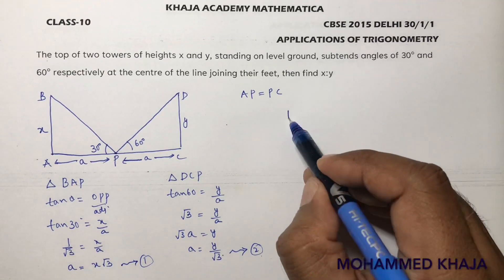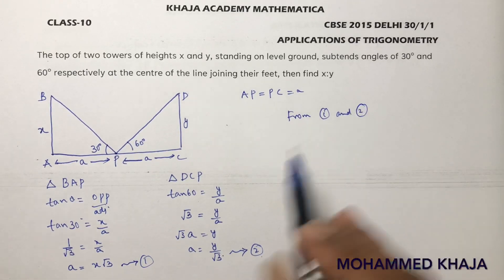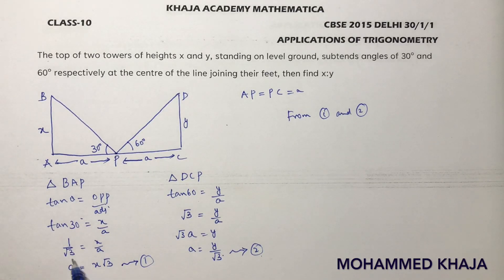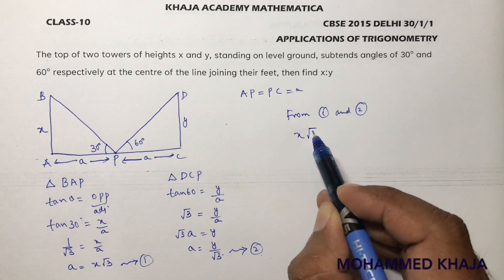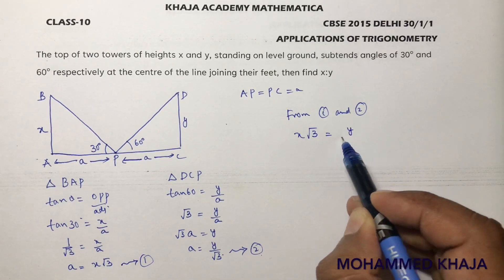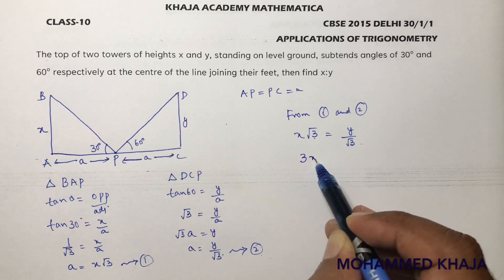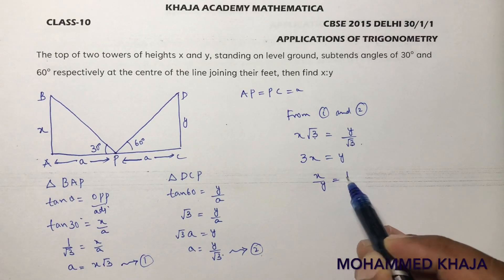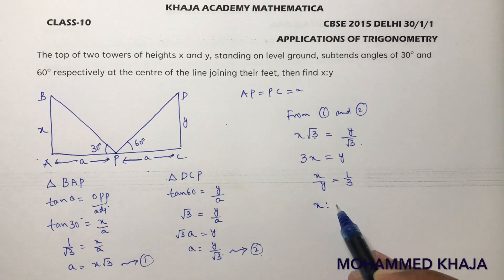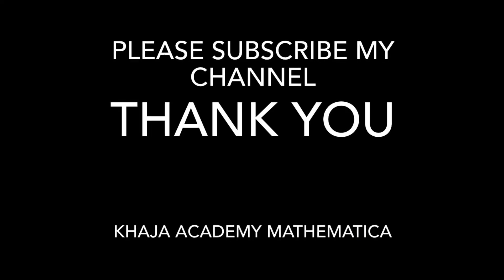Both equations 1 and 2 are equal to A. So equating them: x root 3 equals y over root 3. Multiplying both sides by root 3 gives root 3 times root 3 times x equals y, so 3x equals y. Therefore x over y equals 1 over 3, meaning x to y is 1 to 3.